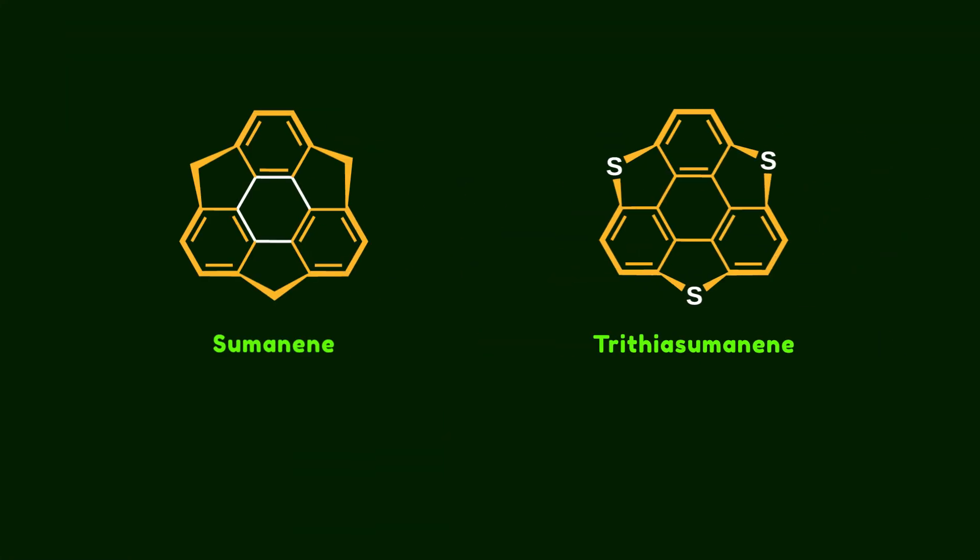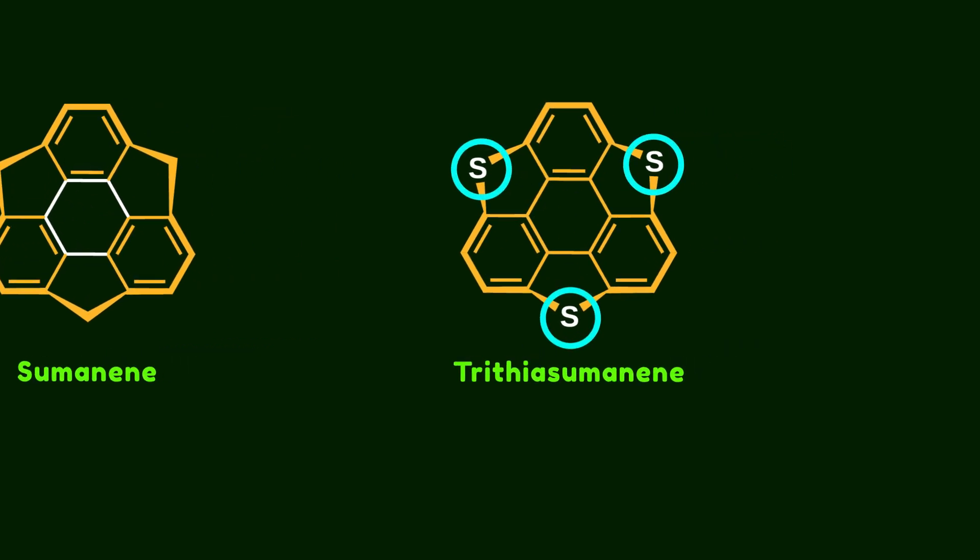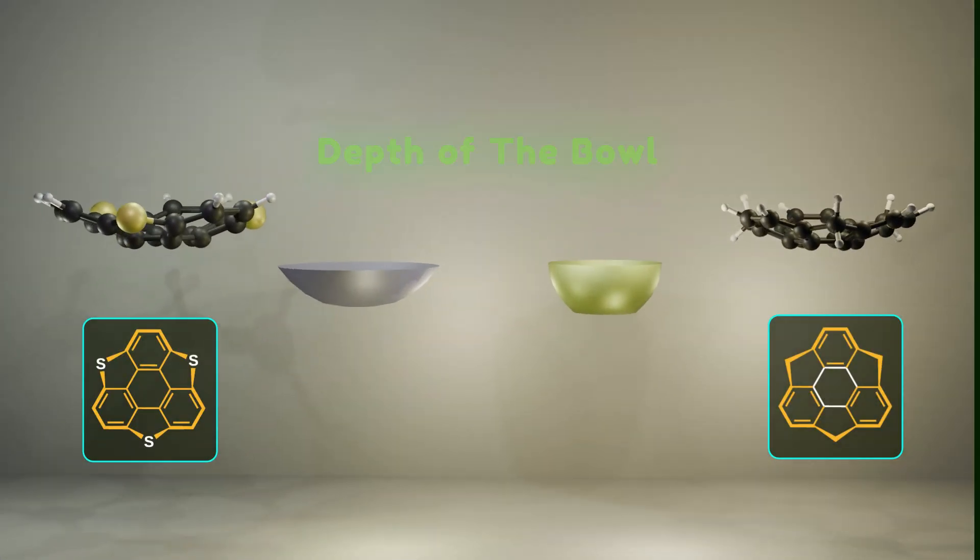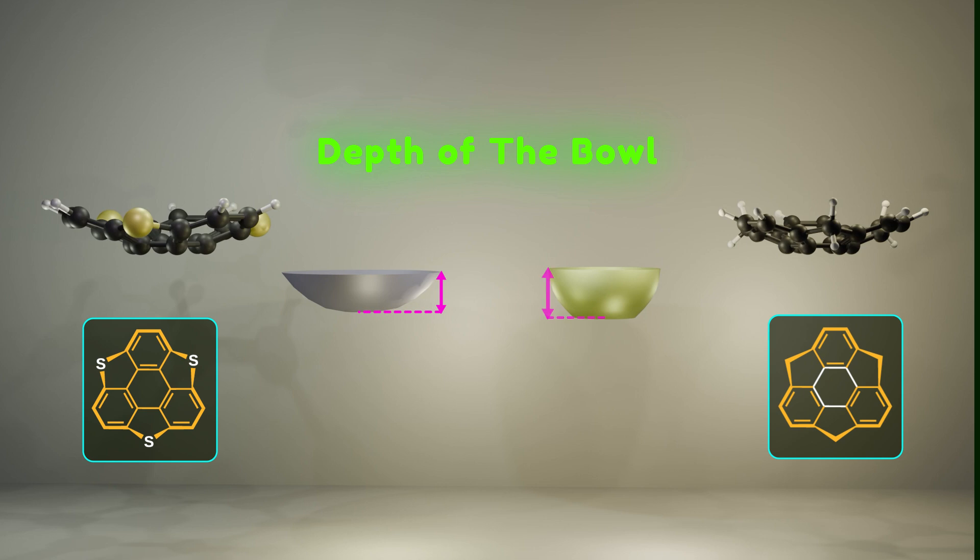Now let's explore why sumanene doesn't show ferroelectricity while trithiasumanene does. What happens when we replace CH2 units with sulfur atoms? As you can see, both molecules have a ball-shaped structure but they differ in depth of the bowl. The larger sulfur atoms make the bowl shallower compared to sumanene. This structural change is what leads to ferroelectric behavior.